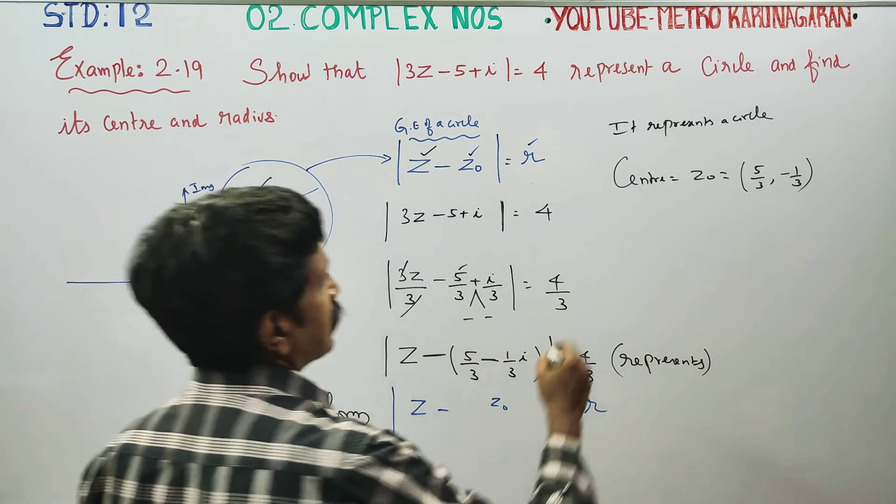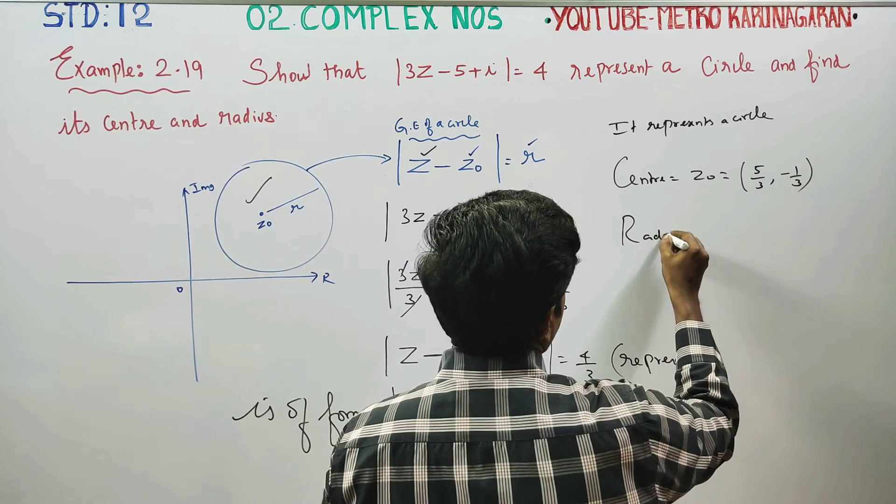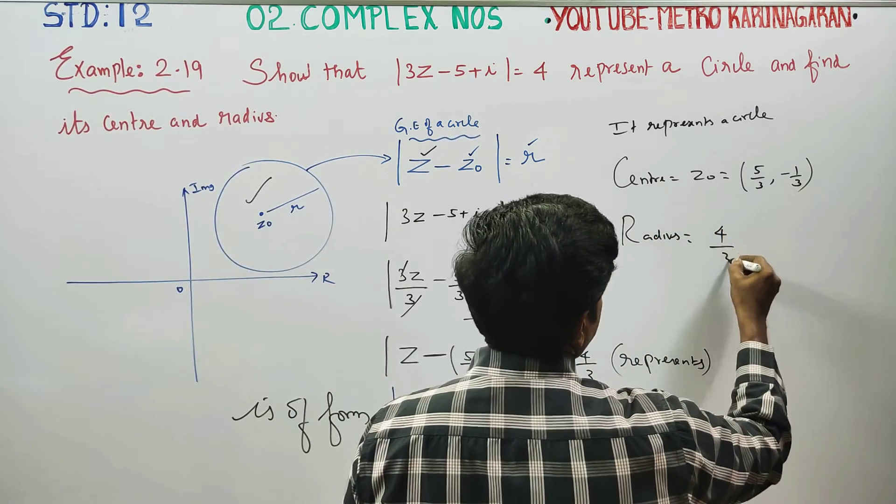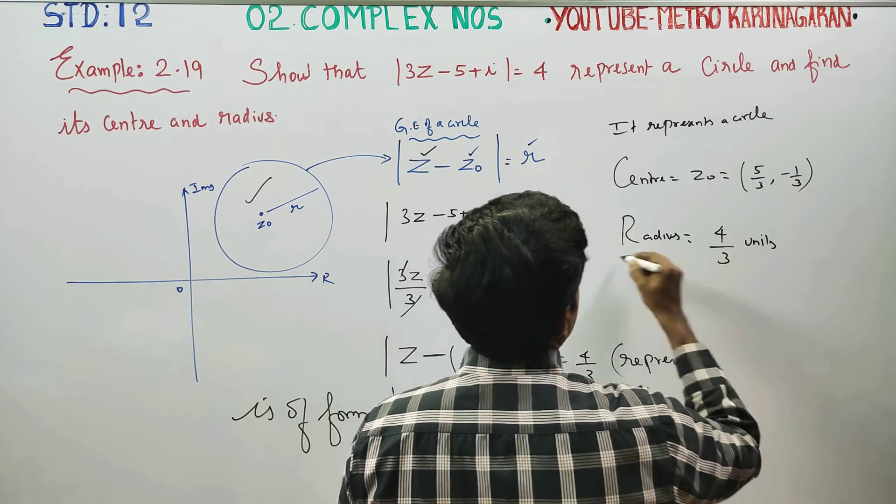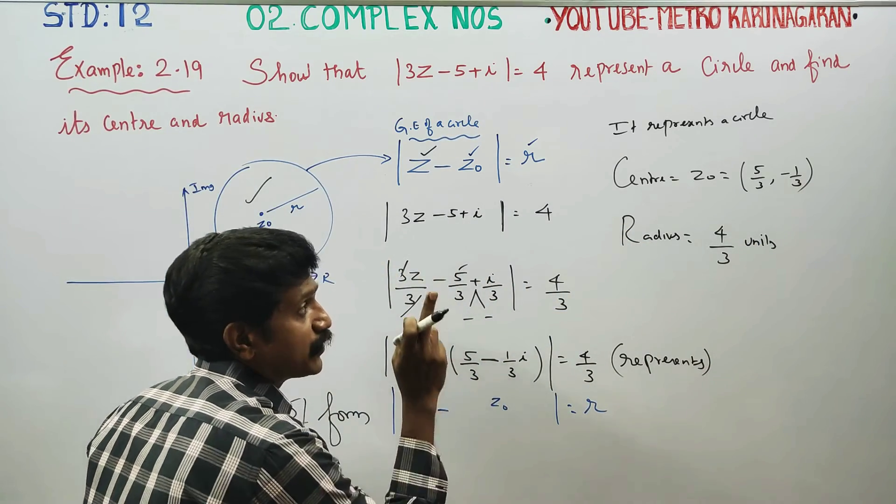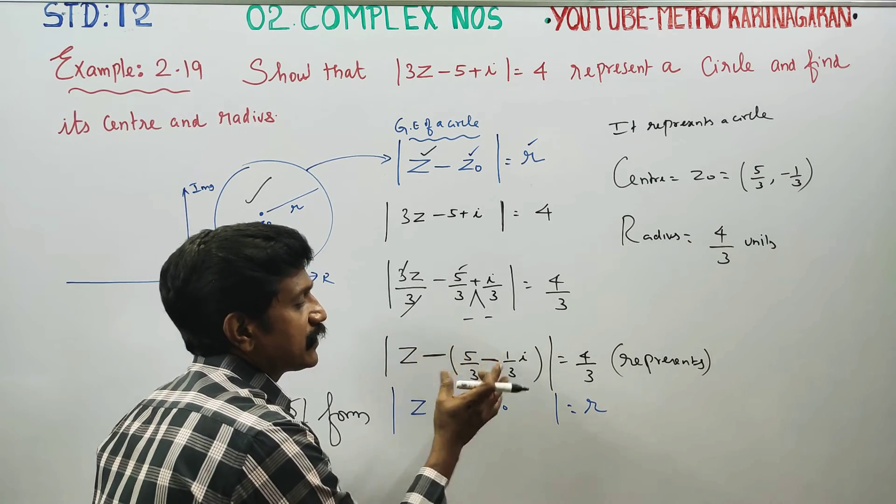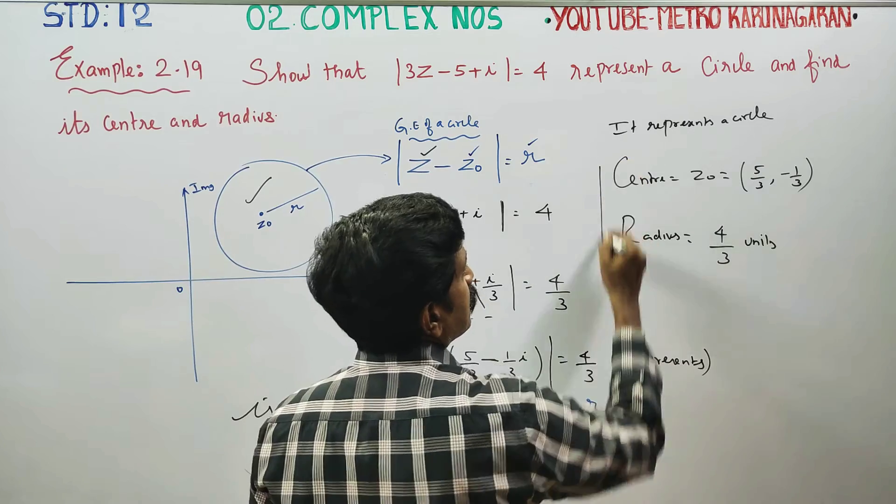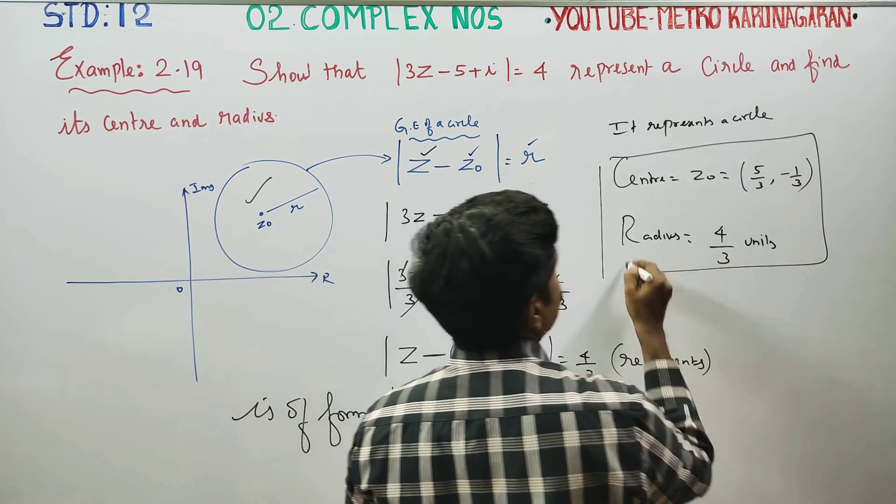Radius. My radius is equal to 4 by 3. Then general circle center point.